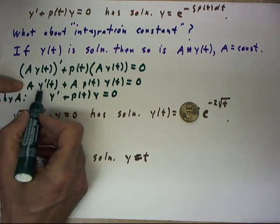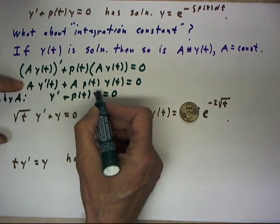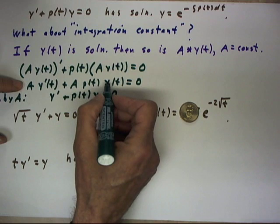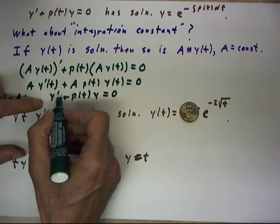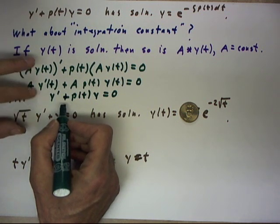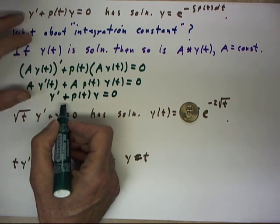Now, in going from this step to this step, I didn't put the t dependence in. I wrote just y' and y instead of y'(t) and y(t), but that's legitimate, and that puts the equation back into the original form to show the equality.